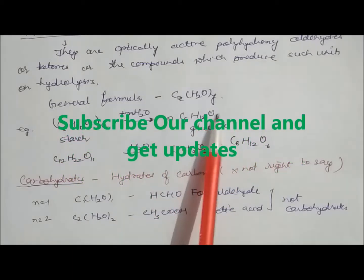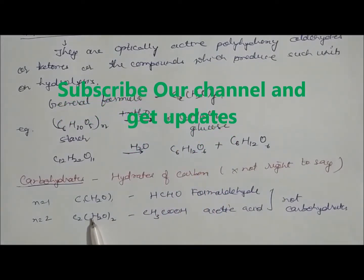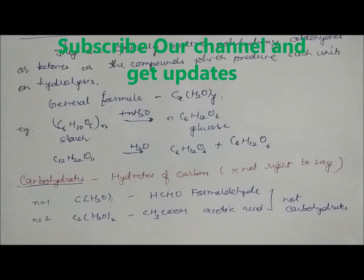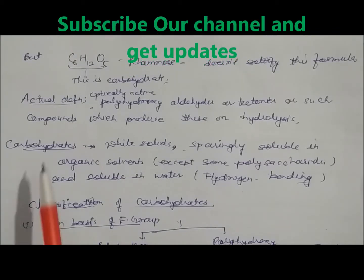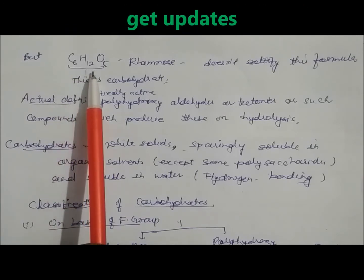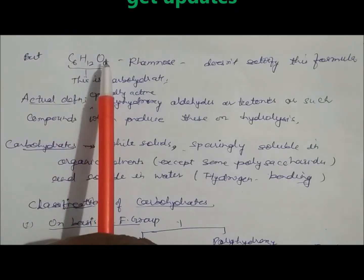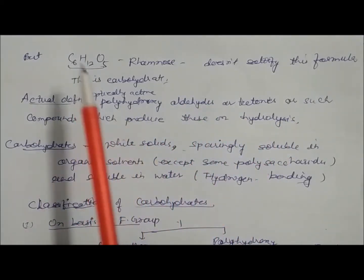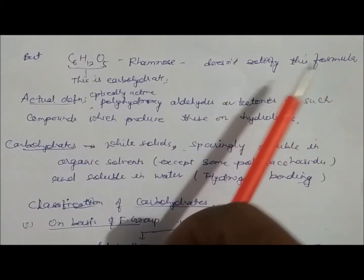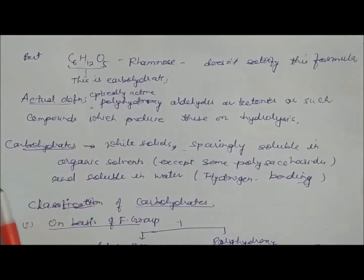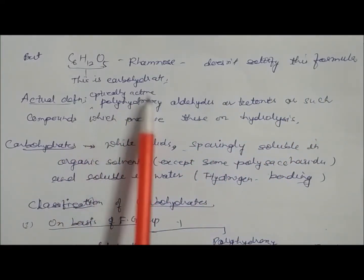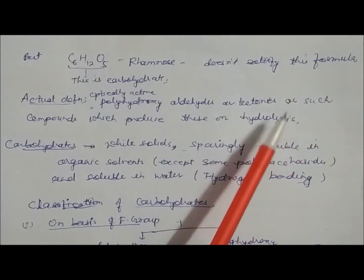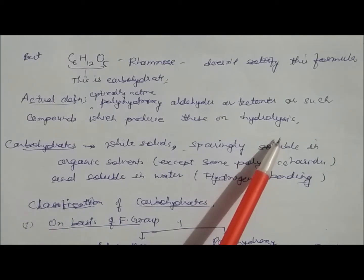So it is not necessary that x and y are always equal in the formula Cx(H₂O)y. For example, the compound rhamnose is C₆H₁₂O₅ — here oxygen is 5, so it does not satisfy the general formula. It is a carbohydrate but doesn't fit the formula. So the actual definition is: optically active polyhydroxy aldehyde or ketone, or compounds which produce these on hydrolysis.